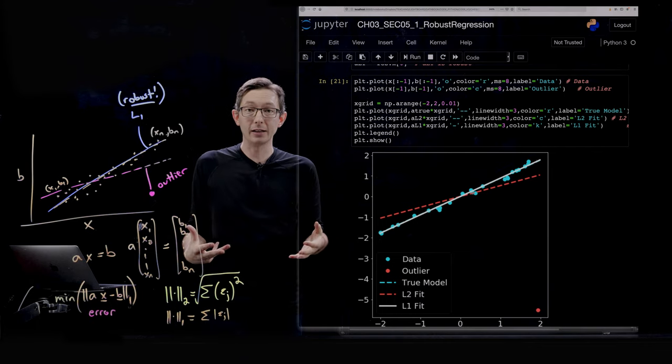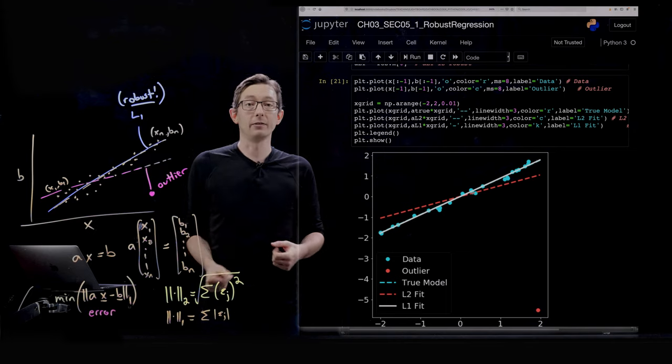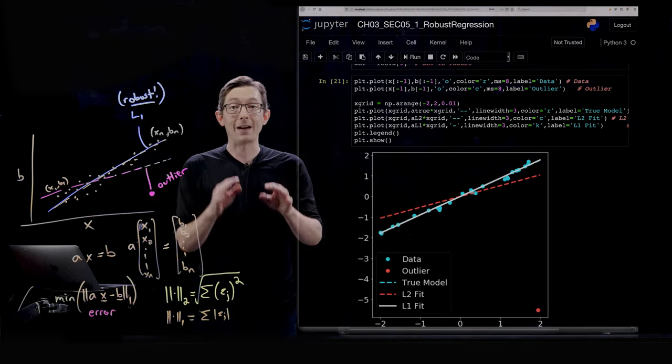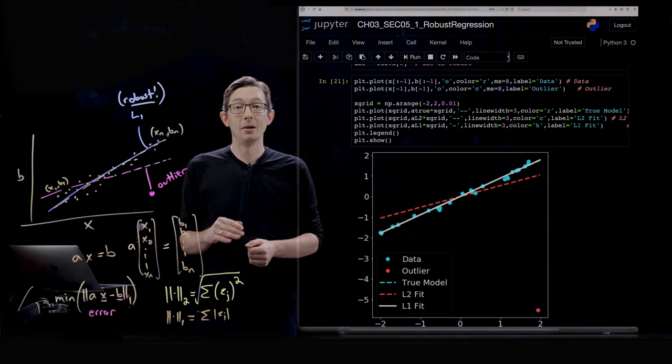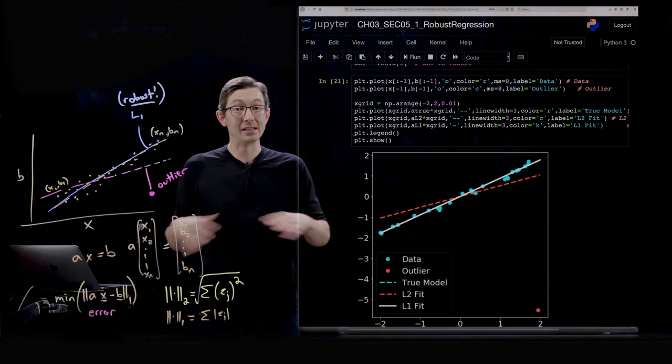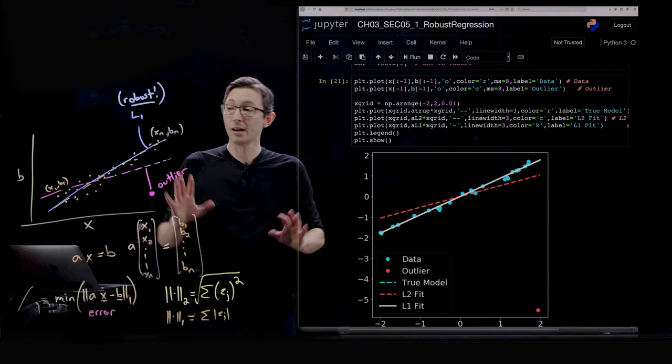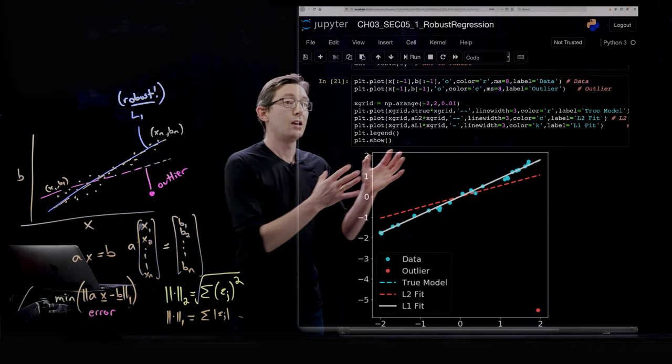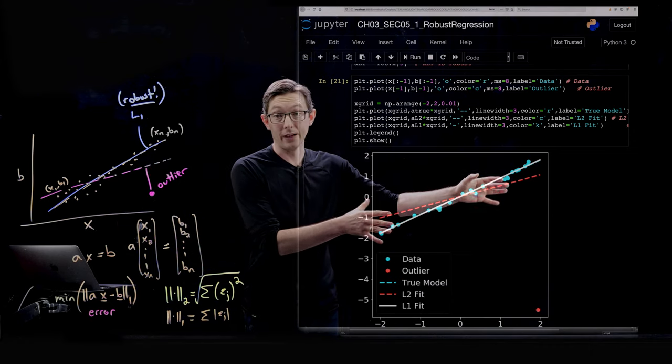In the real world, real data is dirty. Your sensors are going to fail sometimes. People are going to write down the wrong values. You get fat finger data entries all the time. And when you deal with real world data, you are going to have outliers and corruption and missing values and all kinds of problems. The L1 norm gives you an incredible robustness when you're doing data fitting.